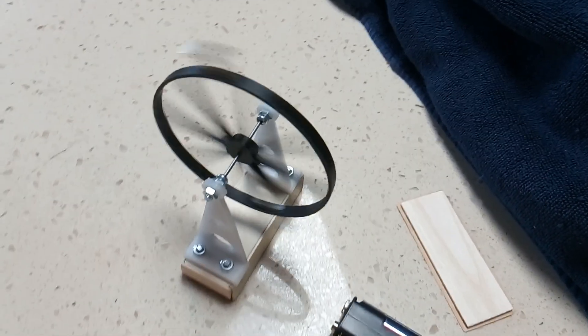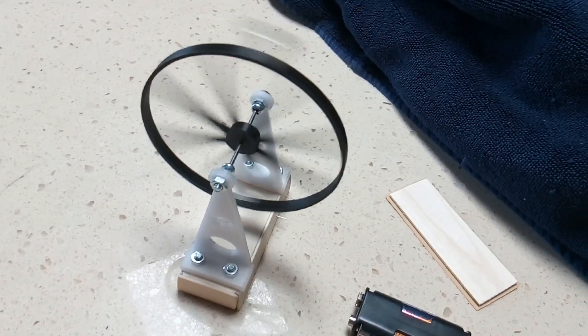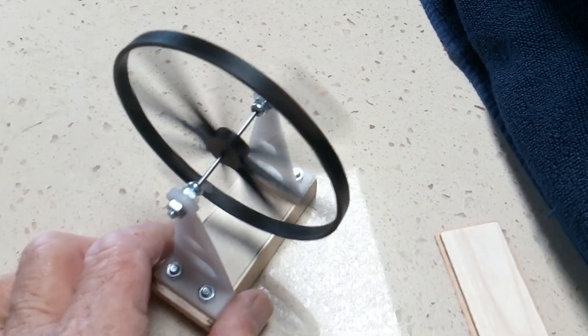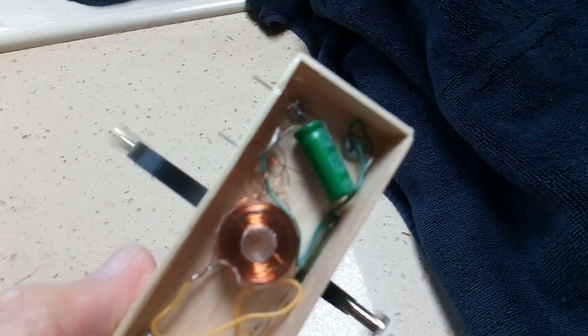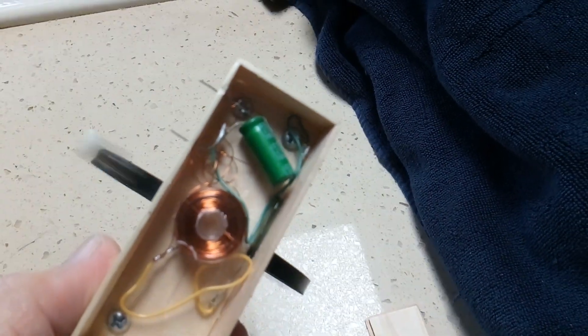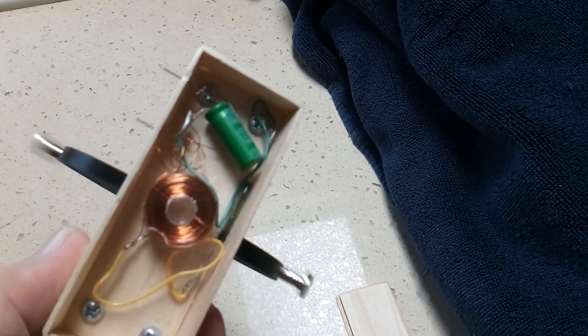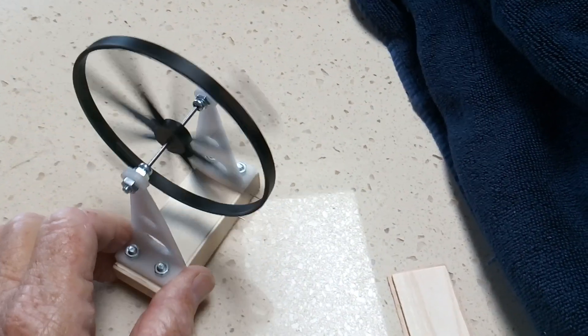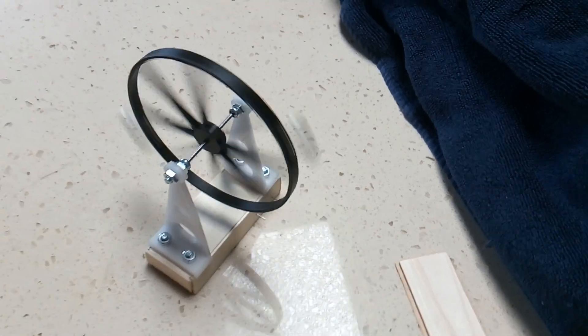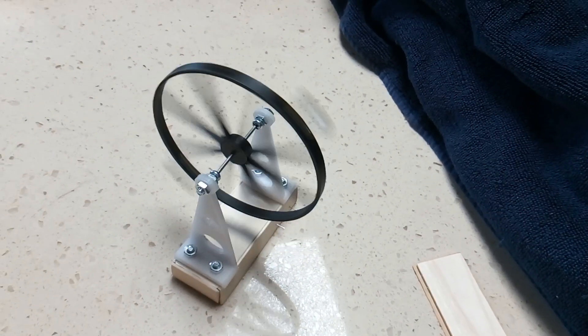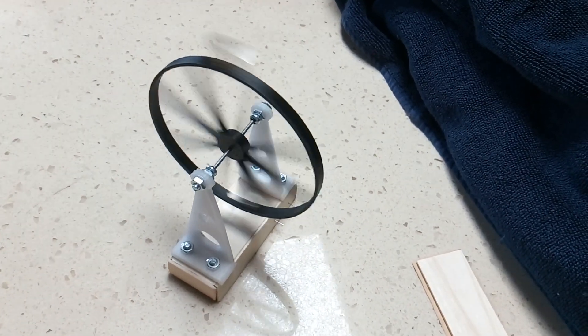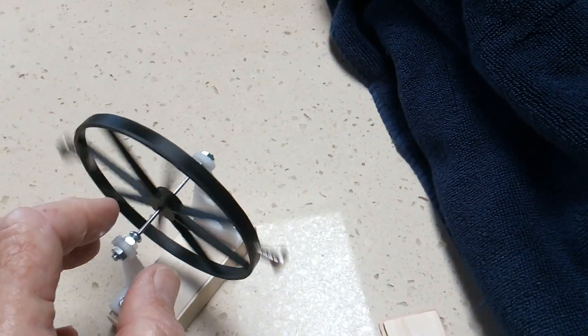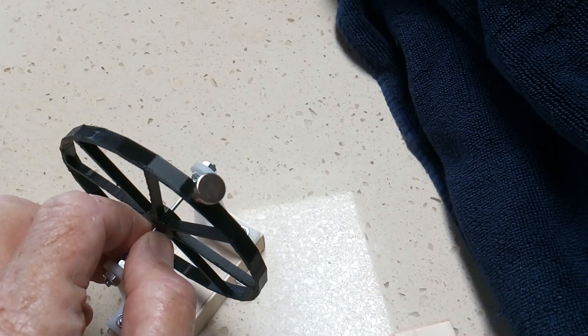What this is, is a coil of wire, a small fired super capacitor, and that reed switch down in there. As the magnet goes by, it tells the reed switch to close, that sends power to the coil, and around and around we go.